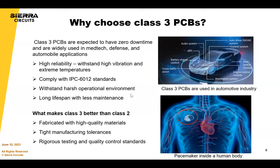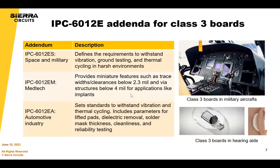Why is Class 3 better than Class 2? There are different materials selected because of Class 3, and there is more testing that happens in Class 3 to make sure the board is going to be able to meet any longevity requirements. Here are some IPC specs — IPC 6012 ES is really what we're seeing a lot of these days, and there are a couple of other aspects as well.